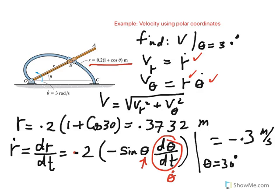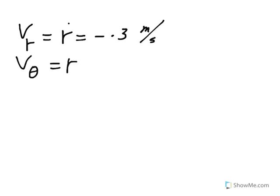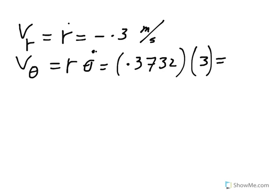Remember, V sub r is r dot. We just calculated r dot—it happens to be minus 0.3. And V sub theta is r theta dot. Remember, r was determined earlier and it was 0.3732 meters times theta dot, which is 3 radians per second. So this comes out to be about 1.12, and the unit should be meters per second.